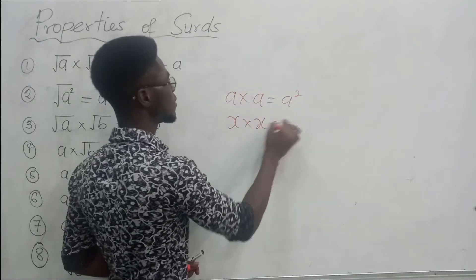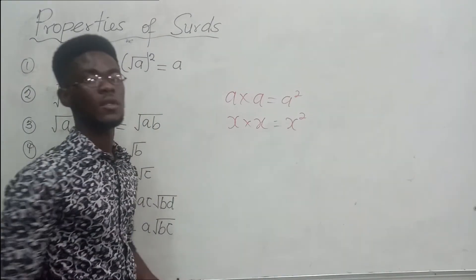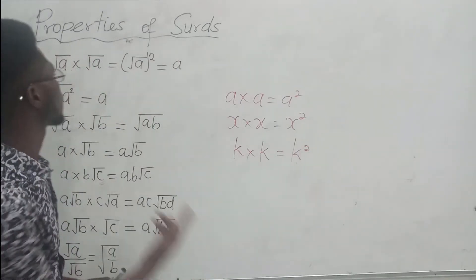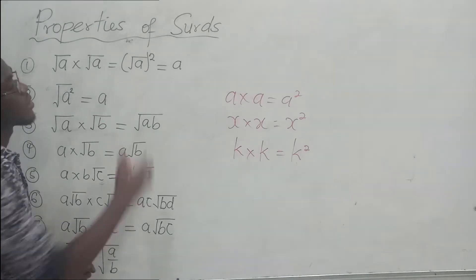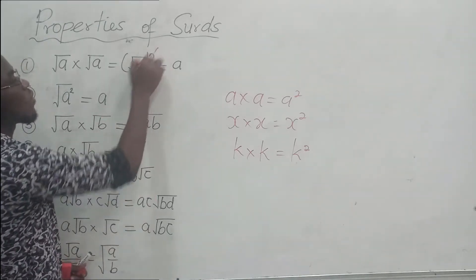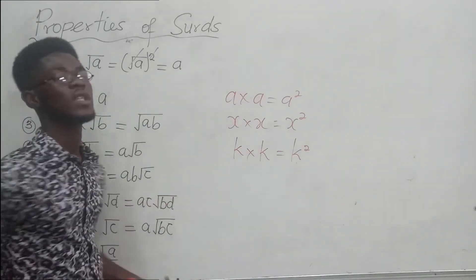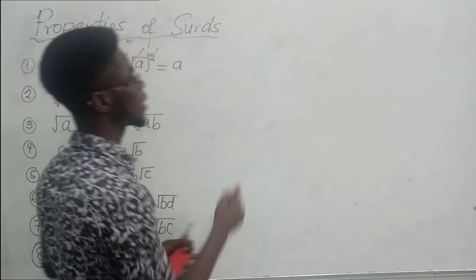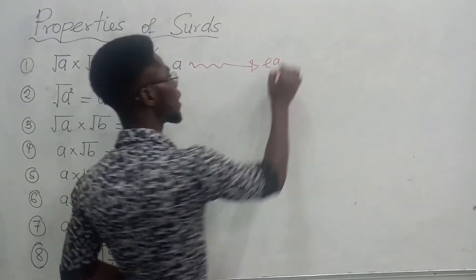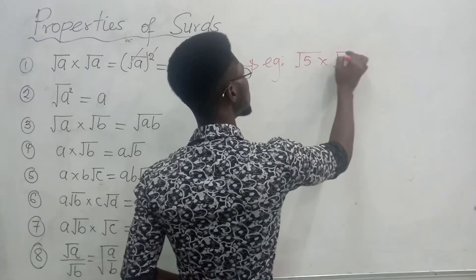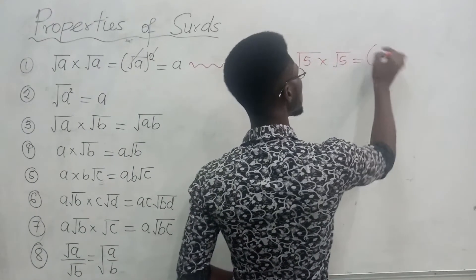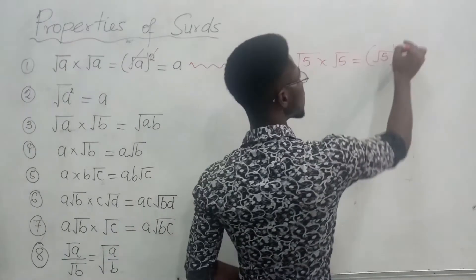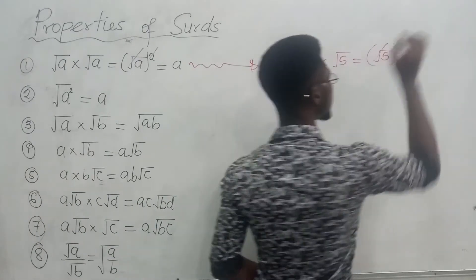If you have x by x, it gives us x squared. If you have k by k, it gives us k squared. The same thing applies here — root a times root a gives us root a squared. The square cancels the root sign and it simplifies to a. For example, the square root of 5 times the square root of 5 equals the square root of 5 squared, which simplifies to 5.